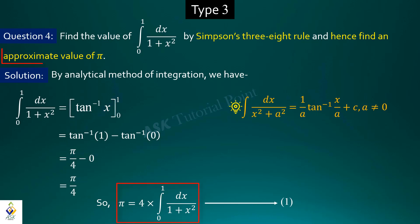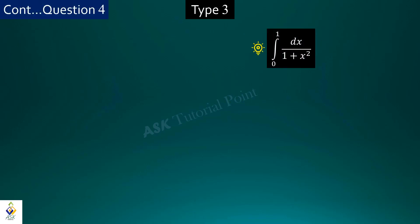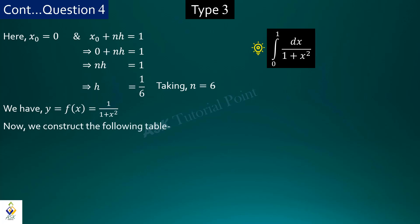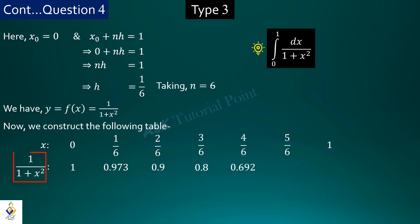By cross-multiplying, pi equals 4 times the integration from 0 to 1 of dx upon (1 plus x squared) — marking this as equation 1. Using this relation, we will define the approximate value of pi. We set x0 equals 0, x0 plus nh equals 1, and take n equals 6, so h equals 1/6. The integrand is 1/(1 plus x squared). We construct a table with x values having constant gap 1/6 and their corresponding ordinates.